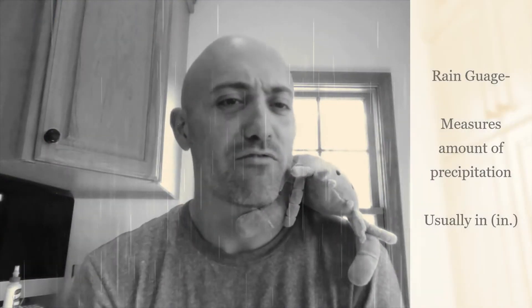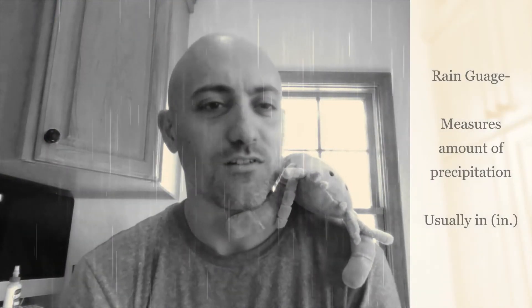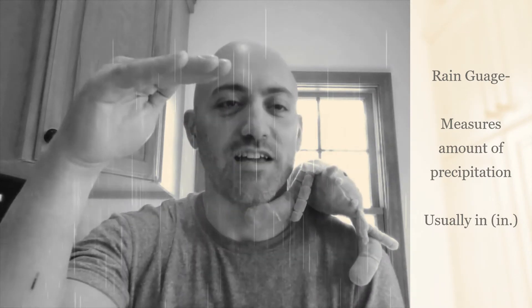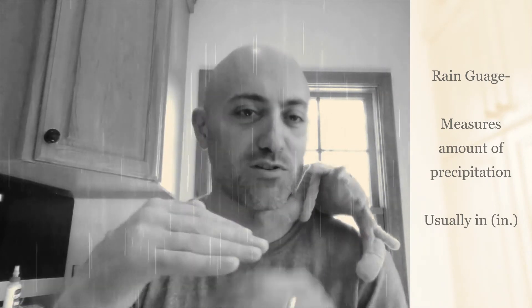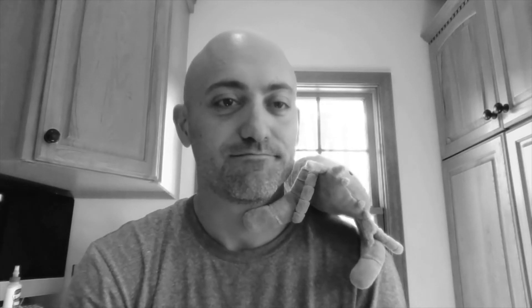We're back — we forgot one. A rain gauge measures how much rain has fallen. Pretty straightforward. Precipitation gauge or rain gauge — you need to know how many inches of rain or snow have fallen.